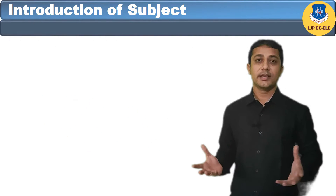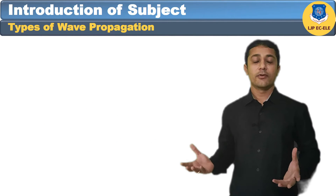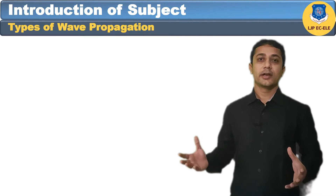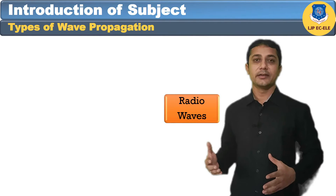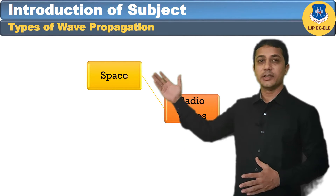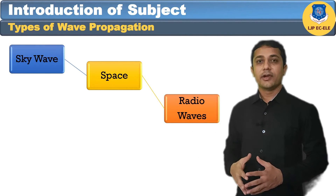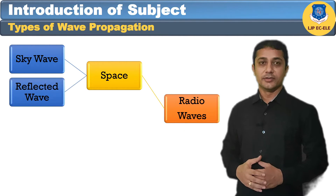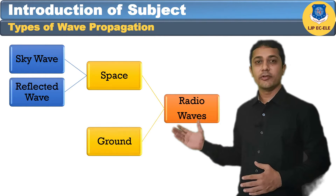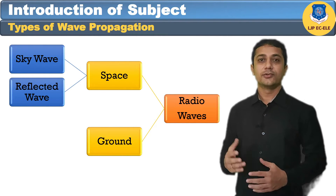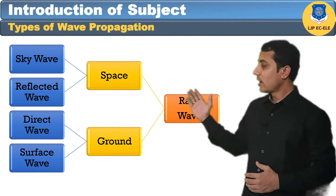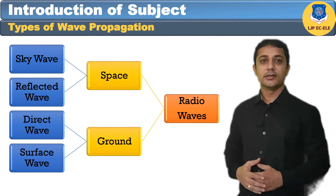There are different types of wave propagation, as waves can transmit and be received either from the ground or from space. According to that, we can categorize radio wave propagation into different categories. The first category is the space wave, which is further divided into sky wave and reflected wave propagation. The second category is the ground wave, which is further divided into direct wave and surface wave propagation.